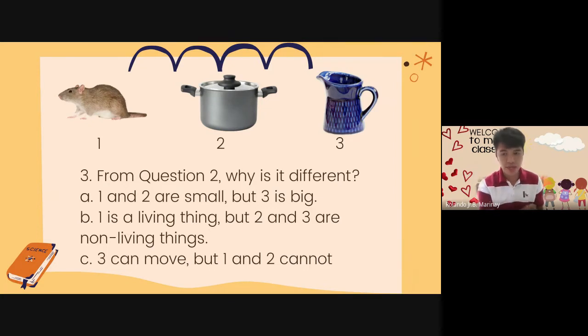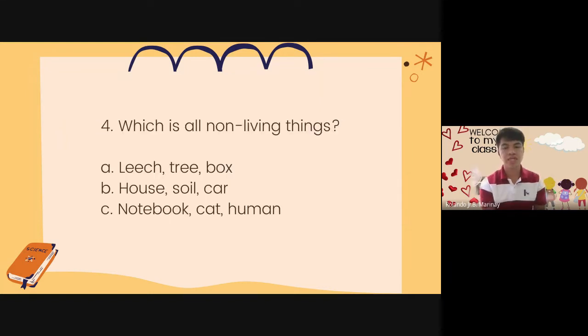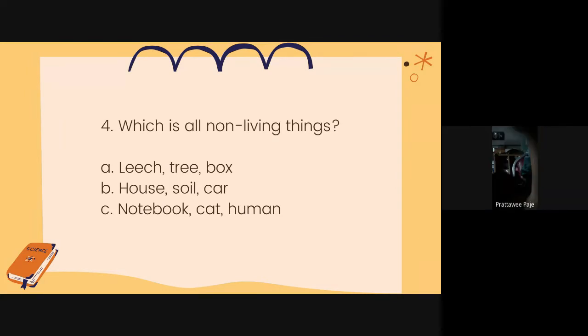For those who just entered the room, we are on page 182. Number four. Which is all non-living things? A. Leach, tree, box. B. House, soil, car. C. Notebook, cat, human. Which is all non-living things?